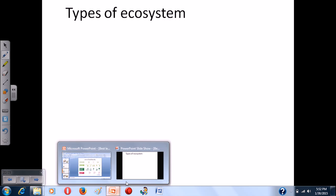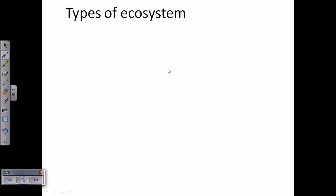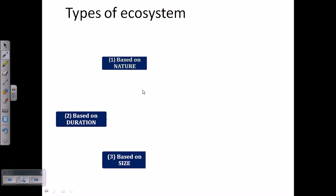So the ecosystem can be classified according to three different parameters. For example, based on the nature of that ecosystem, we can classify based on the duration of the ecosystem. We can also classify it based on the size of that ecosystem. These are the three major parameters based on which we can divide or classify ecosystem.